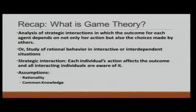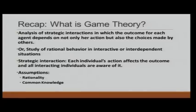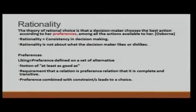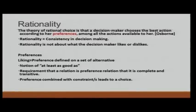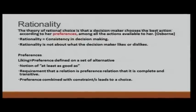We have been talking about Nash equilibrium and other solution concepts, but before applying those solution concepts, we have to think about two assumptions first: rationality and common knowledge. Game theory is basically a study in rational choice theory according to economics. What do we mean by rational choice theory? The theory of rational choice is that a decision maker chooses the best action according to her preferences among all the actions available to her. When we learn a subject, it is important to understand the jargon that comes with it.